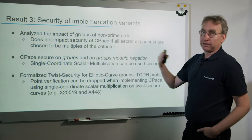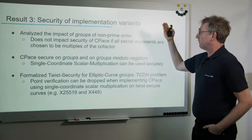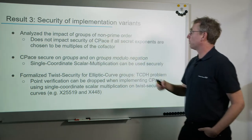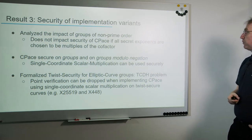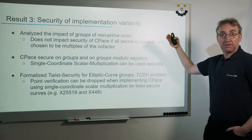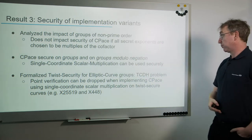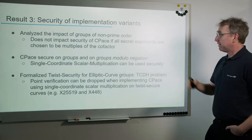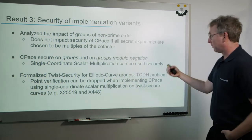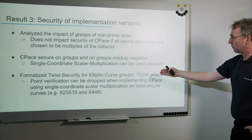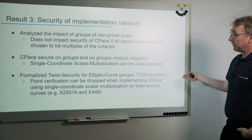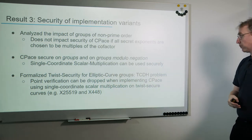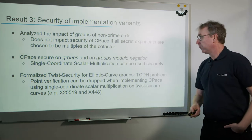Finally, our analysis showed various other implementation aspects don't impact security. We showed that groups of non-prime order have no impact on security, that CPACE on groups and CPACE on groups modulo negation are both secure — so single-coordinate scalar multiplication such as x25519 can be used securely. We also formalized the twist security notion for elliptic curve groups, coining it the twist computational Diffie-Hellman problem, showing point verification can be dropped when using single-coordinate scalar multiplication on twist-secure curves such as x448 or x25519.